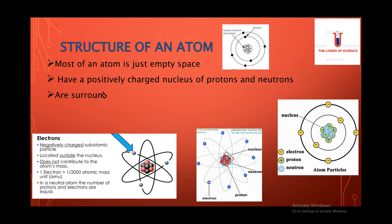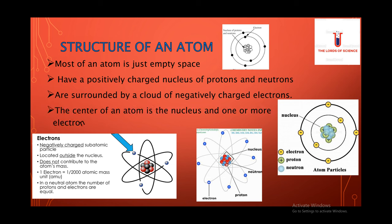They also have these negatively charged subatomic particles called electrons, which help with electricity. The center of an atom is a nucleus, and one or more electrons surround the nucleus. As you can see over here, that's how the periodic table is there.